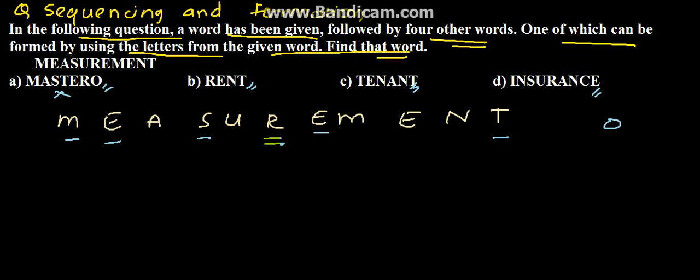If you see rent R E N T, that means rent can be formed. Next is tenant T E N A N T. So we have two times T and N. So tenant cannot be formed.